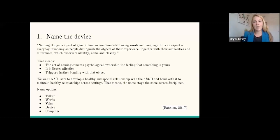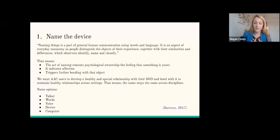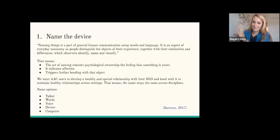So we want to name the AAC device. Some name options you can consider: talker, words, voice, device, computer, Bob, Paul — whatever you want to call the AAC device, you just want to decide on it together. This name will stick, so we want to first make sure that the family likes it. It's going to travel with the child as long as they need it, and we want this to carry over across settings. My talker is my talker in ABA. My talker is my talker in speech. My talker is my talker in OT, at home, at school — this talker is mine to express myself. This also has direct implications for cross-disciplinary collaboration. How cool for that child to hear "grab your talker" from the OT, the BCBA, and the speech therapist — and know: yeah, it's my talker.